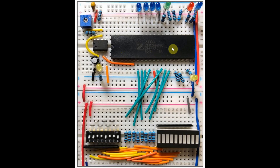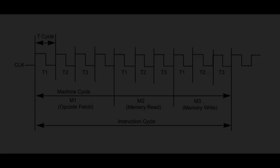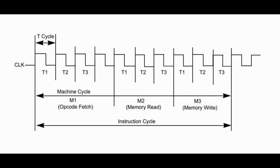In this circuit, we will program the Z80 processor by inputting the instruction through the 8-bit DIP switch. We will only use one-byte instructions as input and see the effect of the instruction on the connected LEDs. The Z80 microprocessor executes three types of instructions: memory read or write, I/O read or write, and interrupt instructions. In this video, we will focus only on memory read or write instructions.